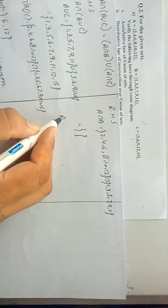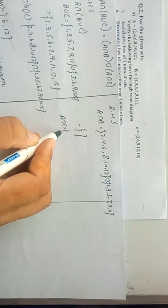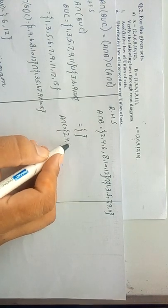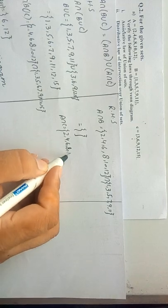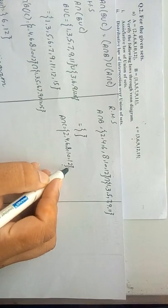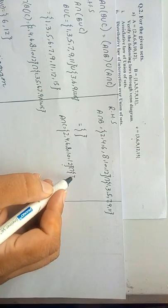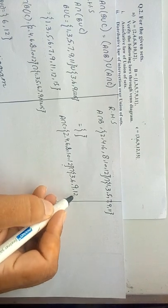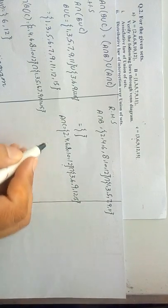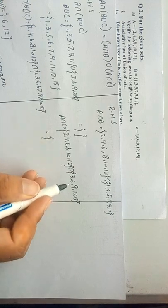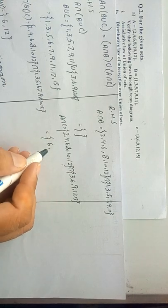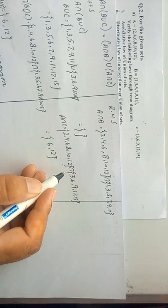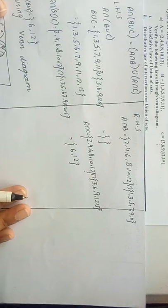Next, we will find A ∩ C. A = {2, 4, 6, 8, 10, 12} and C = {3, 6, 9, 12, 15}. The intersection of A and C will be {6, 12}. These two are the intersection of A and C.